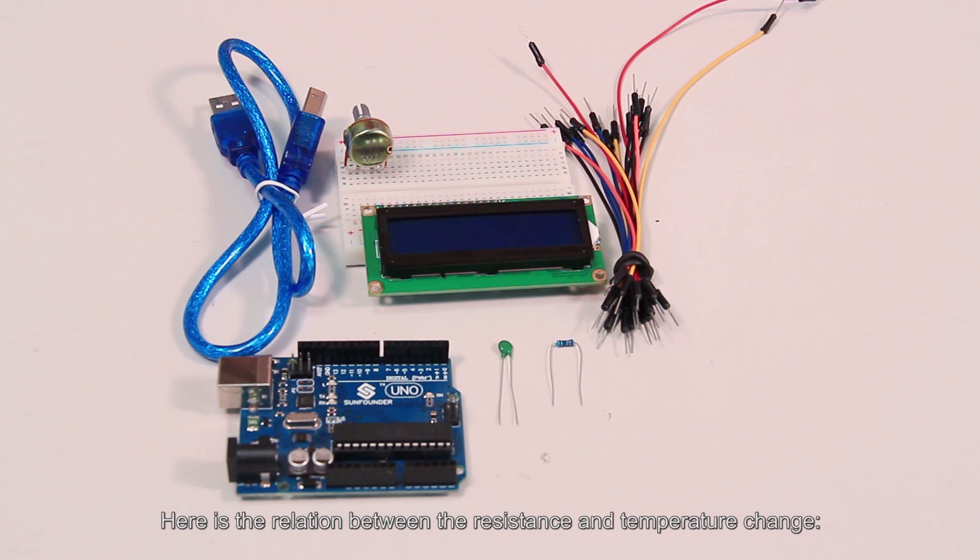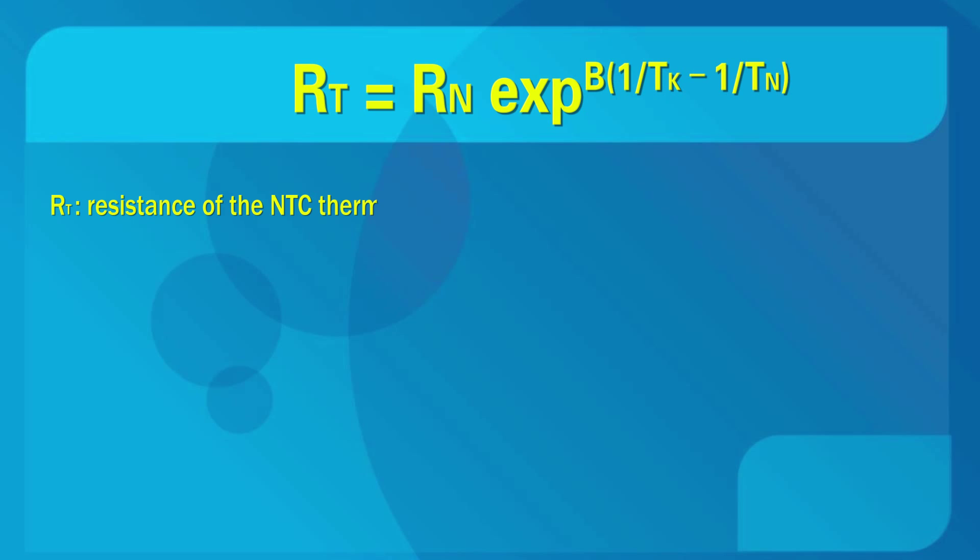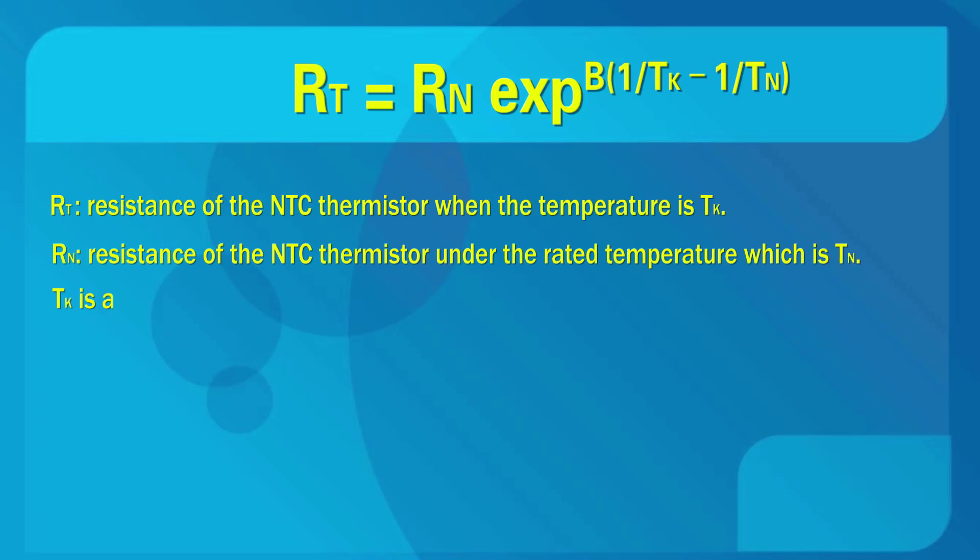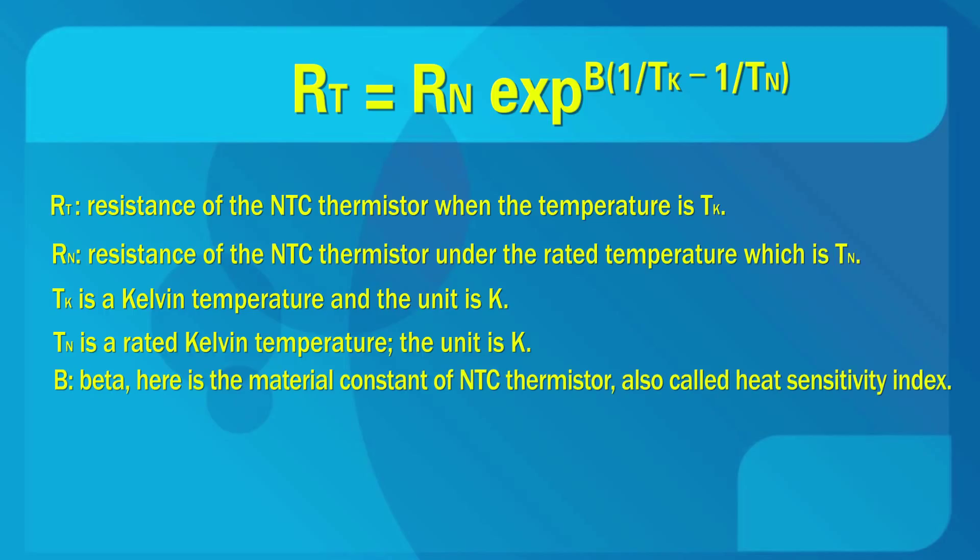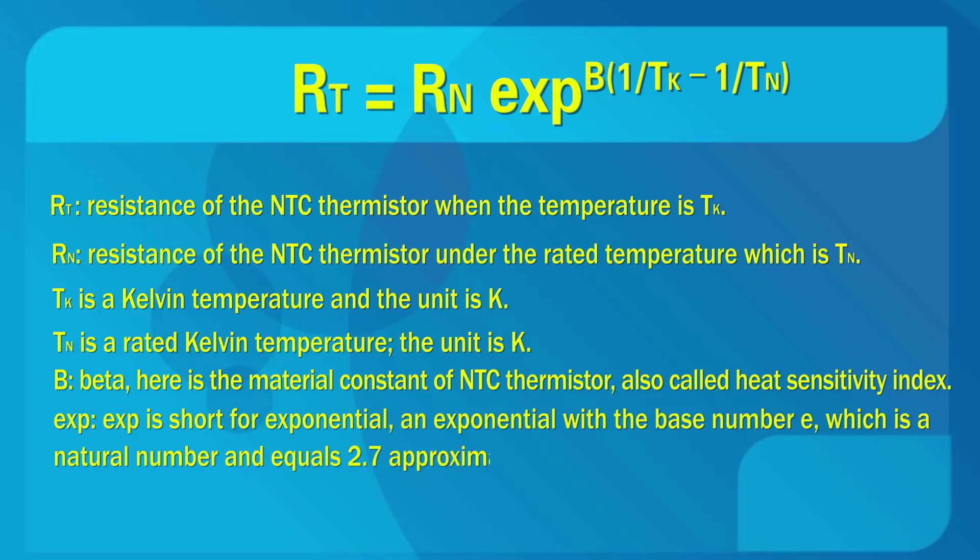Here is the relation between the resistance and temperature change. RT means the resistance of the NTC thermistor when the temperature is TK. RN is the resistance of the NTC thermistor under the rated temperature, which is TN. TK is a Kelvin temperature and the unit is K. TN is a rated Kelvin temperature, the unit is K. And beta, here is the material constant of NTC thermistor, also called heat sensitivity index. And EXP is short for exponential, an exponential with the base number E, which is a natural number and equals 2.7 approximately. Note that the relation is an empirical formula. It is accurate only when temperature and resistance are within the effective range.